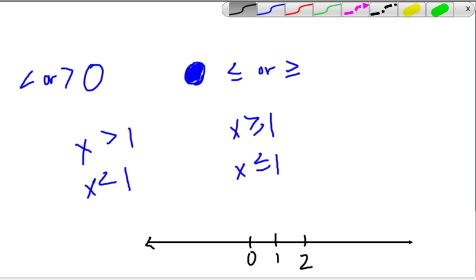If we have x is greater than 1, we would draw an open circle at 1, and then an arrow to the right because it's greater than 1. But if we have x is less than 1, we go in the other direction.